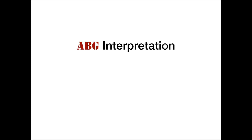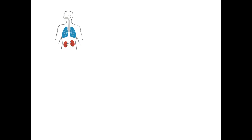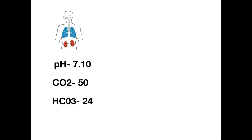Today we're going to do ABG interpretation practice edition. We're going to be looking at ABG examples and interpret them one by one. If you haven't watched our ABG video, there's a link in the description below — I highly recommend you watch that first. Let's get right to it with example number one. We have a pH of 7.10, a CO2 of 50, and a bicarbonate of 24.